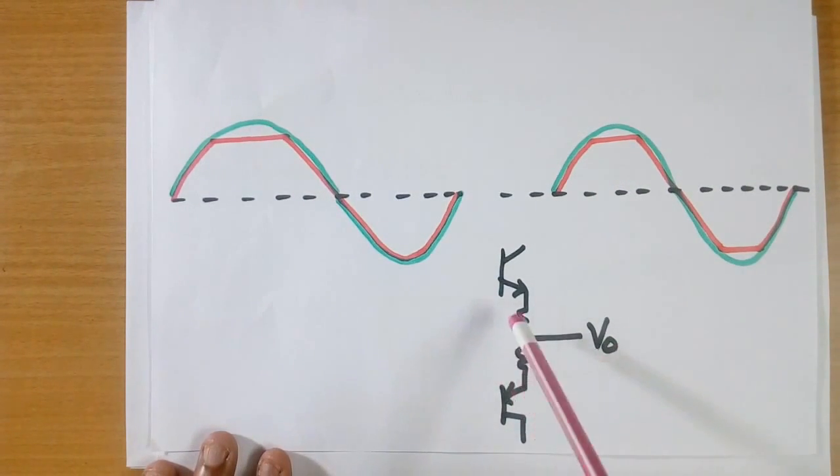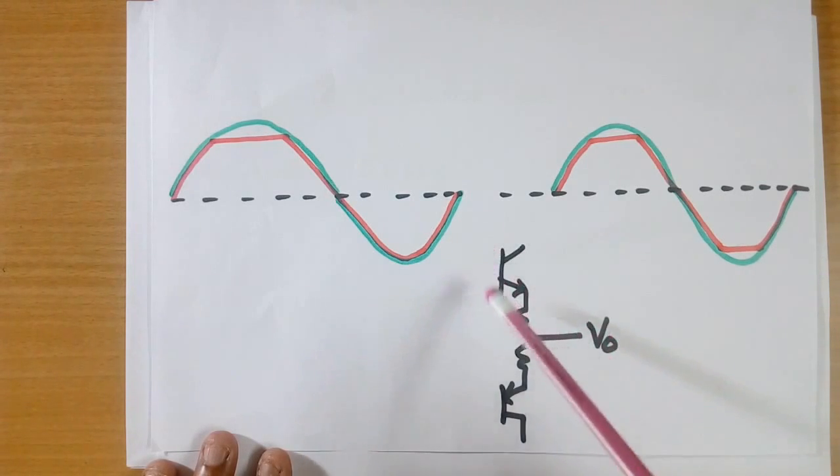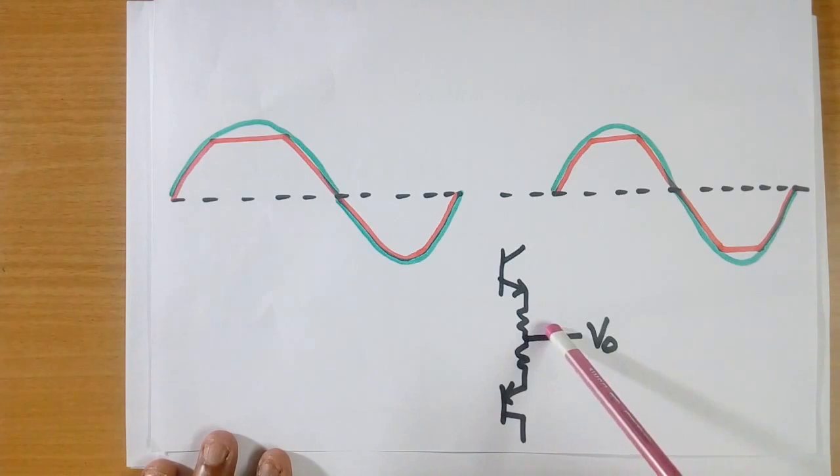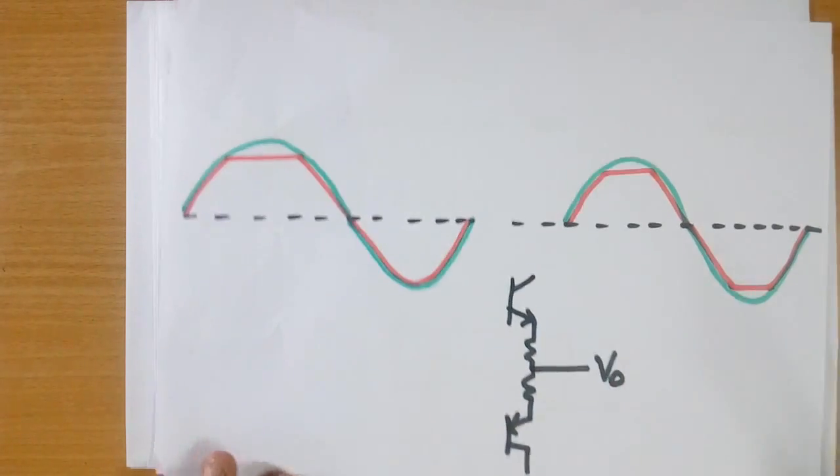This is because the linear IC is having 2 transistors at output, and V0 is here, this is output. Because of drop in this transistor, output voltage will be less than supply voltage.